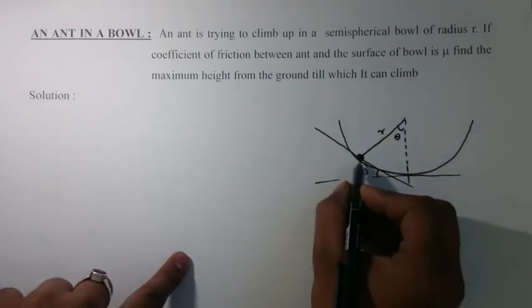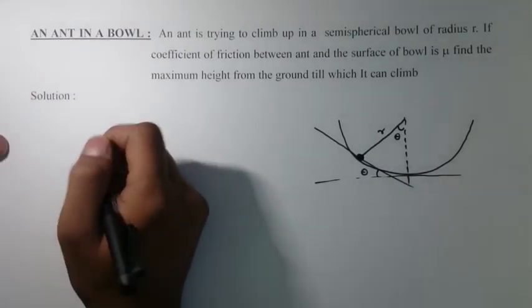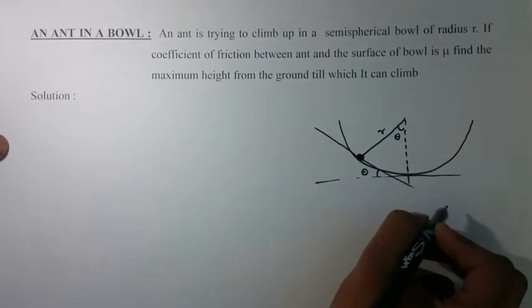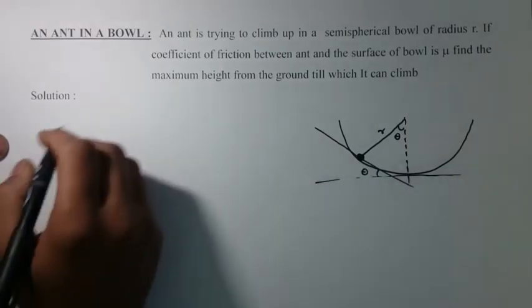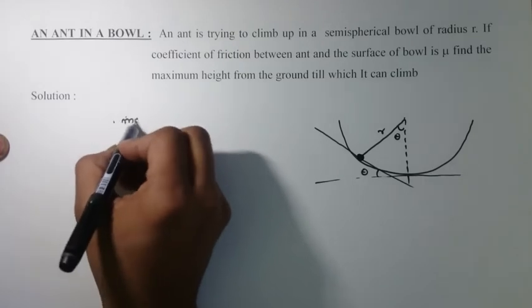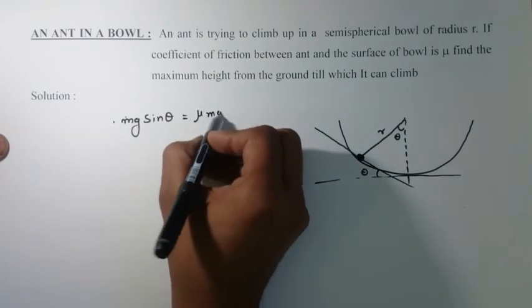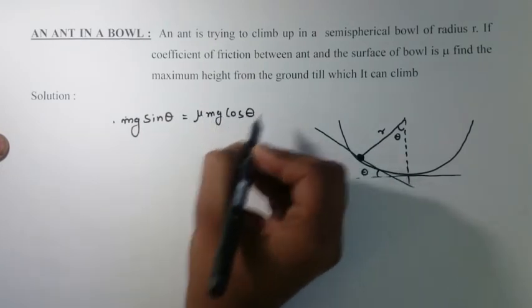If it can climb up till here, then from balancing the weight along the incline with the force of friction, we can find mg sin theta equals mu mg cos theta.